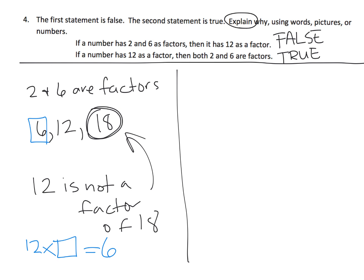And that's the point of this lesson, is that we're only supposed to be dealing with whole numbers. So, both 6 and 18 are examples of numbers that have 2 and 6 as factors, but not 12.